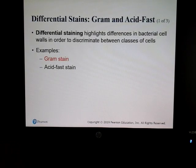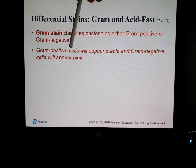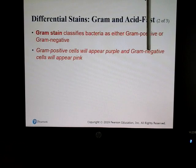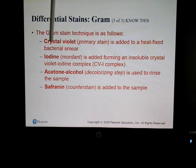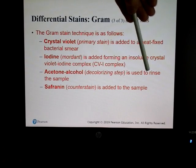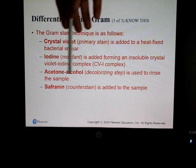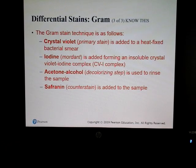The gram stain classifies bacteria as either gram-positive or gram-negative. Gram-positive will appear purple; gram-negative will appear pink. The steps: the primary stain is crystal violet, which binds to both gram-negative and gram-positive cells. Then iodine — the mordant — forms a crystal violet-iodine complex. Next is an acetone-alcohol decolorizing step that rinses the sample, followed by a counter stain with safranin, which is a red dye.